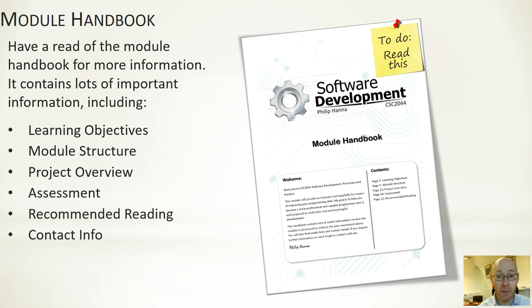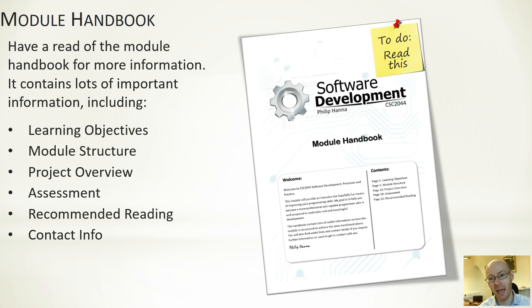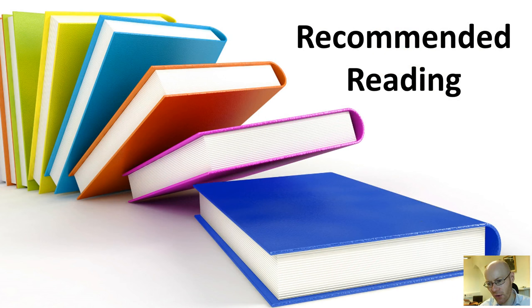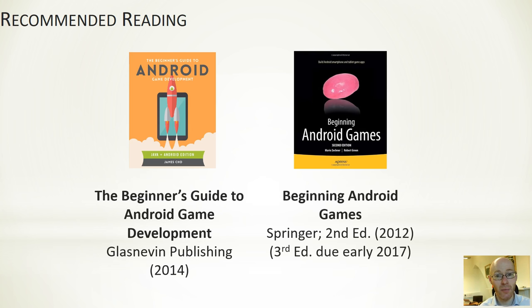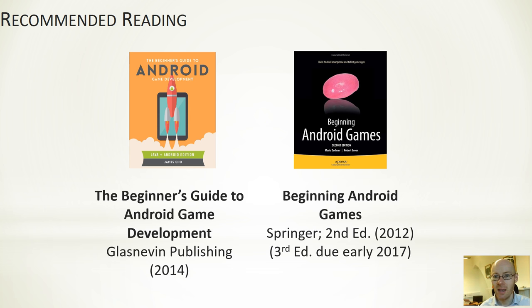You'll find more information on the course content, the learning approach, the learning contract, a weekly breakdown of what we're going to be doing, and the project details in the module handbook — it's about 20 odd pages long. Do download it from Queen's Online, go through it, and keep the document to hand because it's a useful one you'll want to refer to from time to time. In terms of recommended reading, there are a couple of textbooks recommended — the third edition of Beginning Android Game Development is a good one, due early 2017. Alongside those, you'll find a wealth of material online in terms of the Android APIs, tutorials, videos on YouTube — there's no shortage of things you can tap into.